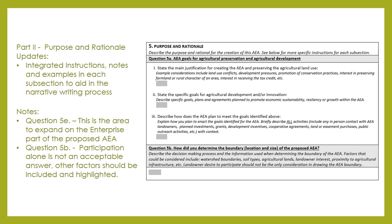This is also where you should discuss the process that was taken to determine the AEA boundary. There should be multiple factors that are considered, not just landowner participation. Some examples of factors to consider include watershed boundaries, soil types, the county comprehensive plan, and proximity to agricultural infrastructures.